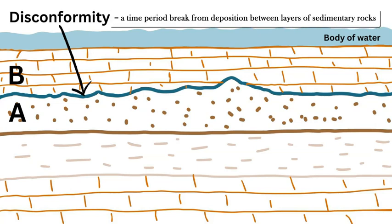The next type of unconformity is a disconformity. This is an unconformity found in between layers of sedimentary rock. The older rock layer labeled A has had its top surface weathered and eroded, creating the uneven dark bold blue line showing the unconformity. Younger limestone, layer B, is then deposited on top over this unconformity, produced by a body of water over time.